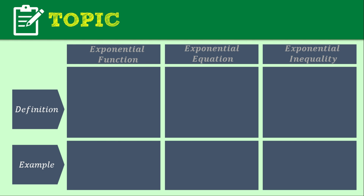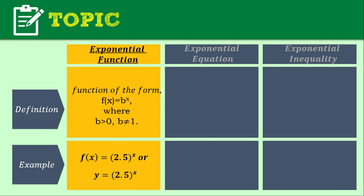Let's start with the exponential function. It's defined as a function of the form f(x) = B raised to the power of X, where your base B is greater than 0 and not equal to 1. An example is f(x) = 2.5 raised to the power of X, or equivalently y = 2.5 raised to the power of X. Here 2.5 is your base B — it's greater than 0 and not equal to 1.